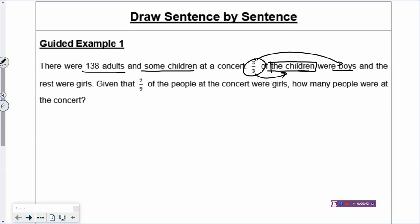And the rest were girls. Given that two-ninths of the people at the concert were girls. Now you have a second fraction — what does this second fraction refer to? It refers to the people. Why do we need to ask what the fraction refers to? Because you can see there are two fractions. Are they referring to the same group? No. The two-thirds refers to the children, and the two-ninths refers to the people. They are not referring to the same group.